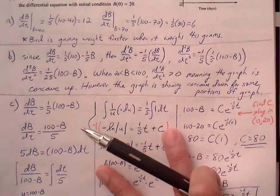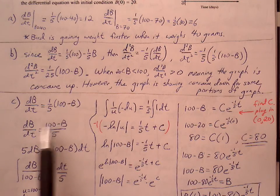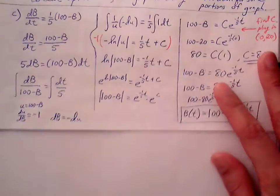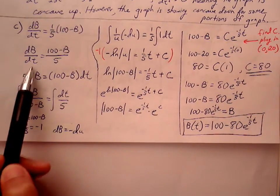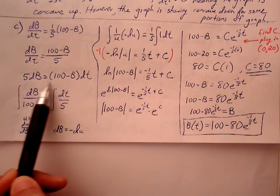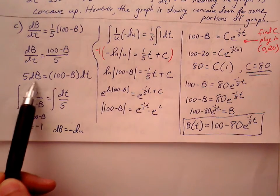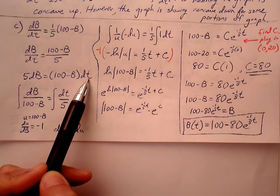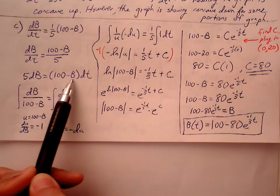Here's our dB/dt: 1/5 times (100 - B). I'm going to write that as a fraction so I can cross multiply. When I cross multiply, I get 5dB/dt equals (100 - B) times dt. Now I'm going to look at this and see how I can get full separation of variables. I want all my B terms on the left side and everything else on the right side, including the t dt's.